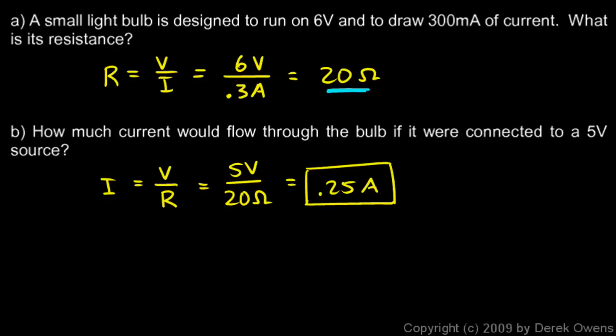And these numbers seem reasonable. It's designed to run on 6 volts, and it draws 300 milliamps, or 0.3 amps. If we hook it up to 5 volts, a little bit less voltage, well, a little bit less current flows, 0.25 amps instead of 0.3. So that's just a simple example of doing a calculation using Ohm's law involving the resistance.